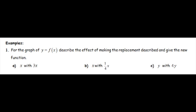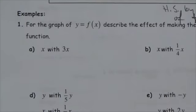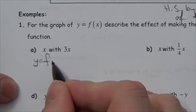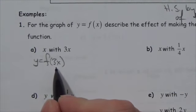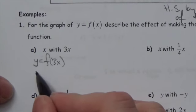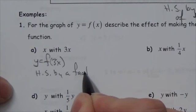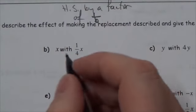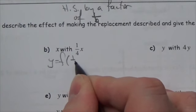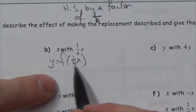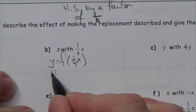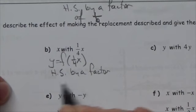For the graph of y = f(x), describe the effect of the following replacements. If I replace x with 3x, I get y = f(3x). To isolate x I divide by 3, so this is a horizontal stretch by a factor of 1/3. If I replace x with (1/4)x, I get y = f((1/4)x). To isolate x I multiply by 4, so this is a horizontal stretch by a factor of 4.